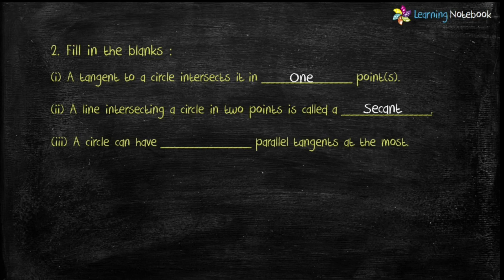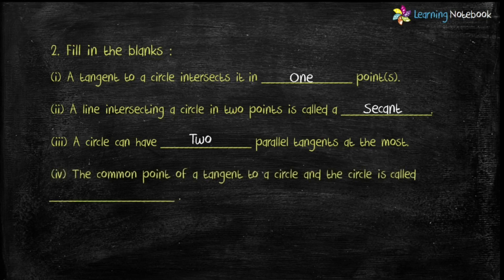Third is a circle can have how many parallel tangents at the most? Two parallel tangents. Next is the common point of a tangent to a circle and the circle is called point of contact.